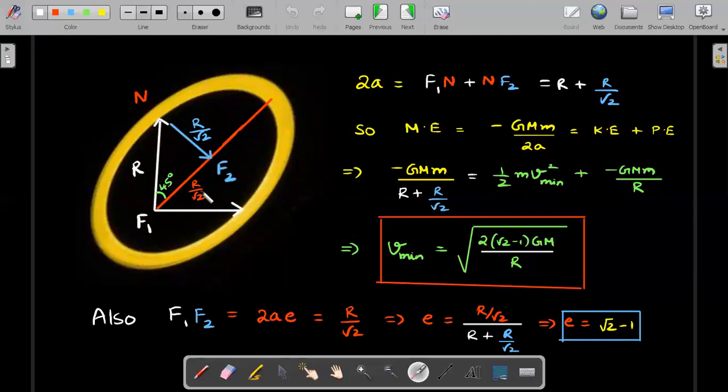Not only that, F1F2 is also equal to R by root 2. And remember, what is the distance between two foci in an ellipse? It is 2AE, right? It's a simple relation, right? 2AE.